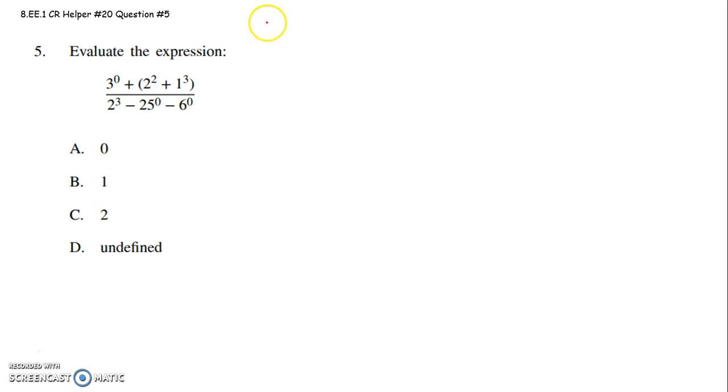So first of all, I'm just going to remind you that 3 to the 0 power is 1. Any number raised to the 0 power will be 1. 2 to the 2nd power means 2 times 2 or 4.